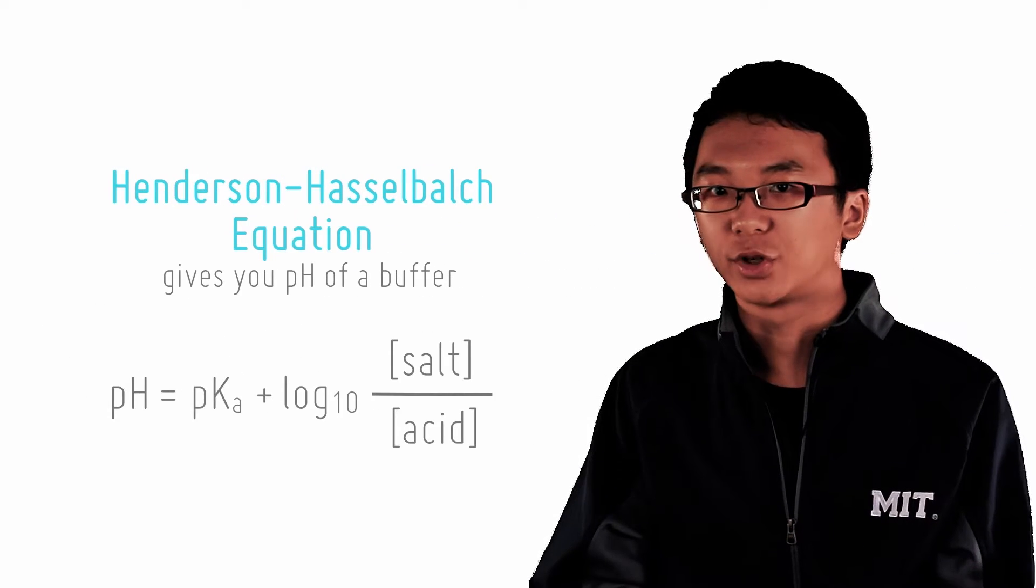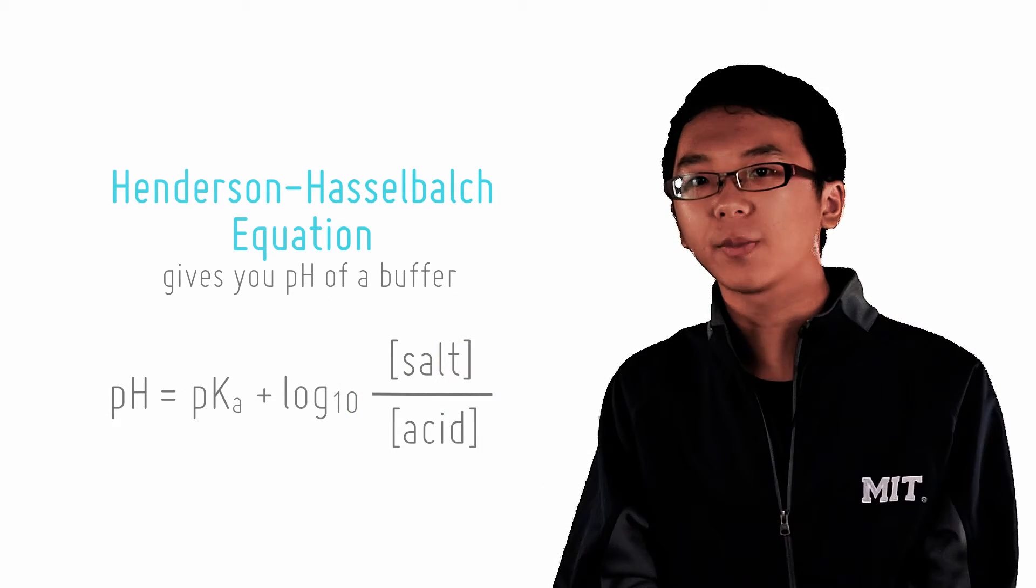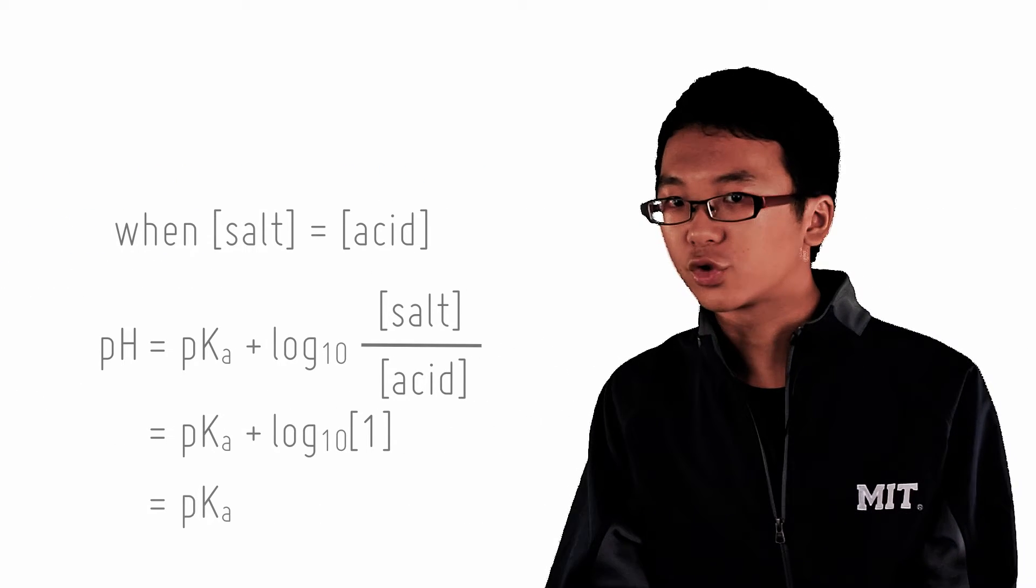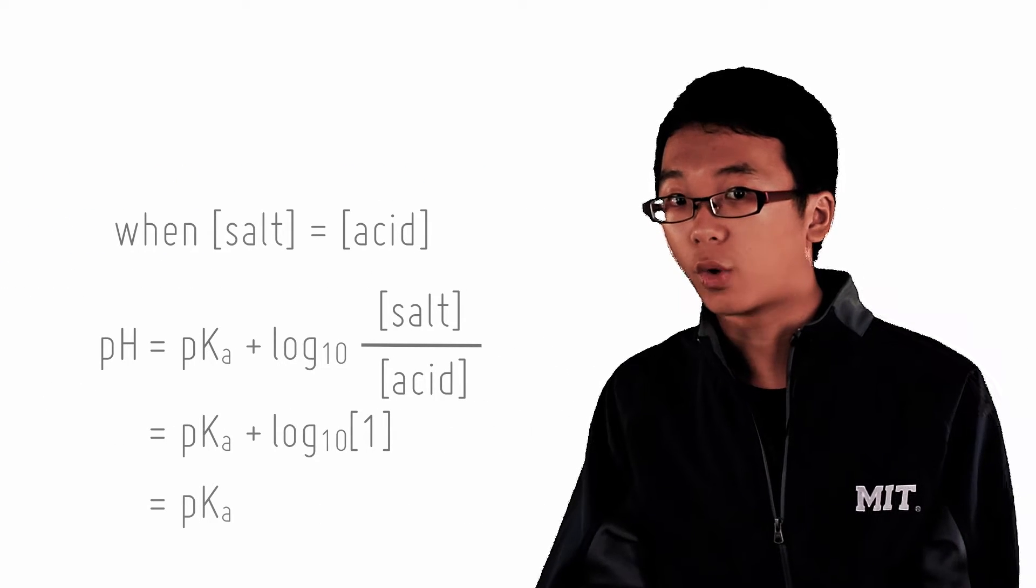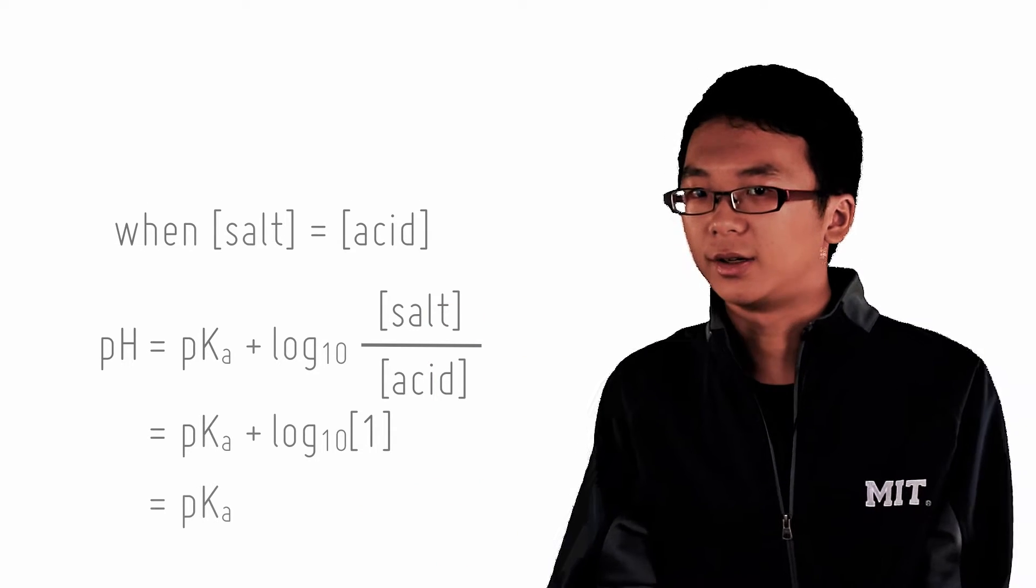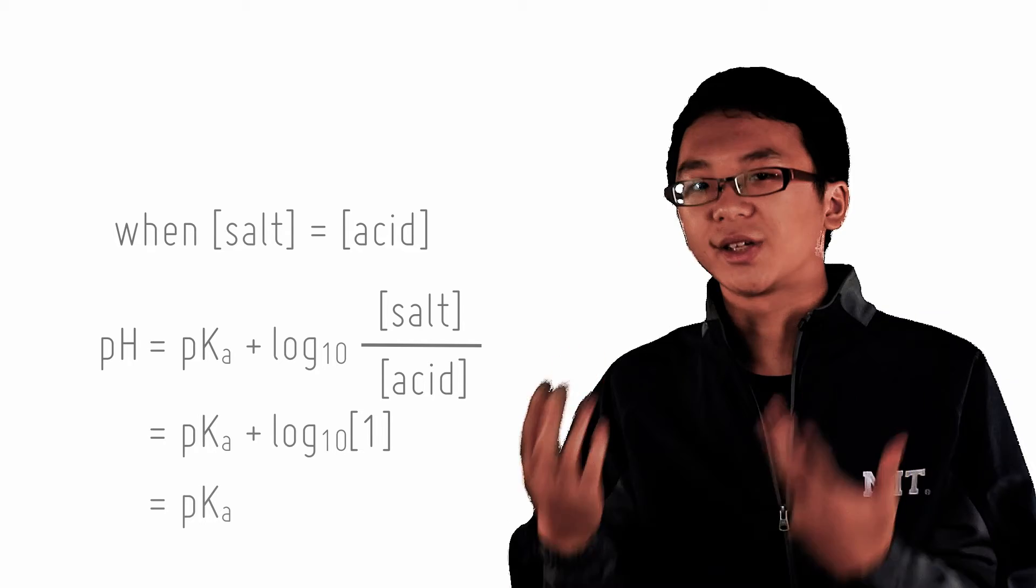This is the Henderson-Hasselbalch equation that you have learnt about in the previous checkpoint. Notice an interesting property. When I add the same amount, a concentration of acid and salt, log 1 over 1 is 0. Therefore pH equals to pKa. Oh cool. But what is the significance of this?